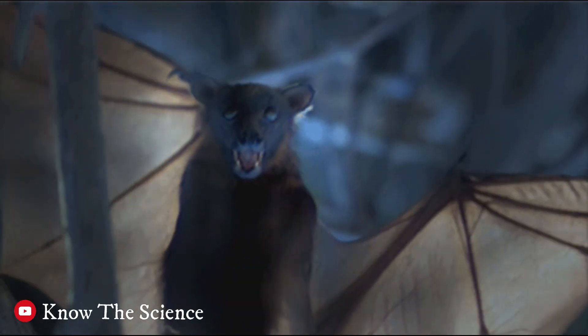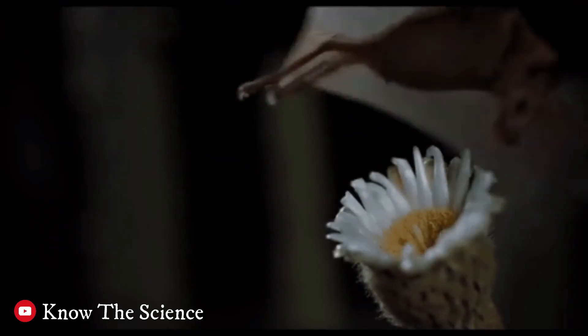Vampire bats have toxic saliva that prevents blood clots. They use chemical weapons to feed from wounds more effectively.